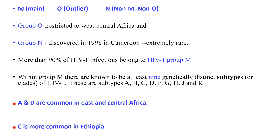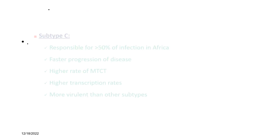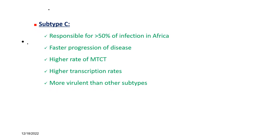More than 90% of HIV-1 infection belongs to HIV-1 Group M. Within Group M, there are at least nine genetically distinct subtypes: A, B, C, D, F, G, H, J, and K. Subtype C is more common in Japan and Africa, while subtypes A and D are common in East and Central Africa. Subtype C is responsible for more than 50% of infections in Africa, and has faster disease progression, higher rates of mother-to-child transmission, higher transcription rates, and is more virulent than other serotypes.